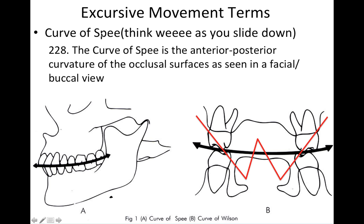We're going on to the curve of Spee and the curve of Wilson. The curve of Spee is the anterior-posterior curvature of the occlusal surface as seen in a facial or buccal view. The way I think of this: imagine yourself on a sled going down and saying 'whee' — curve of Spee, whee. For the curve of Wilson, I imagine a W being inserted into the palate, and that helps me remember the curve of Wilson — it's the cross-arch curvature you see there.